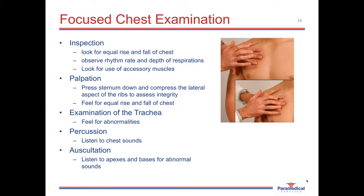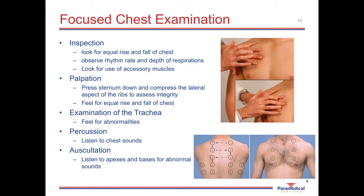Auscultation involves listening to the apexes and bases for abnormal lung sounds. When listening to the bases, do not place the stethoscope below the xiphoid process — at the 11th and 12th ribs you are likely listening to vibrations from abdominal organs rather than lung sounds. In any patient with thoracic trauma, continue this focused chest examination every time you assess vital signs, watching closely for any changes that could indicate the patient is deteriorating.